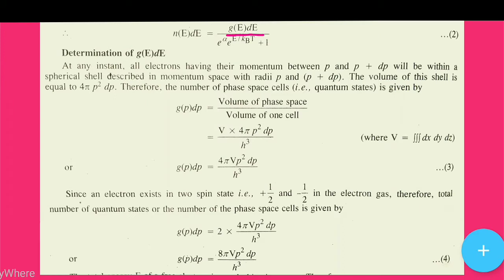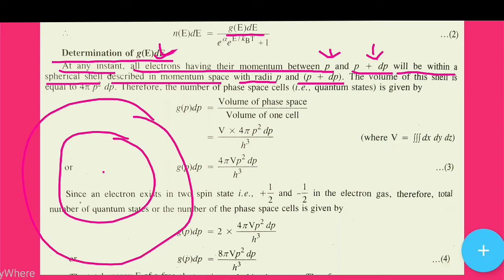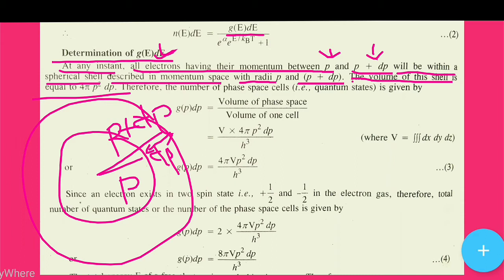First of all, we have to determine g(E)dE. At any instant, all electrons having their momentum between p and p+dp will be within a spherical shell in momentum space with radii p and p+dp. We represent this with a concentric spherical shell whose inner radius is p and outer radius is p+dp, with thickness dp.